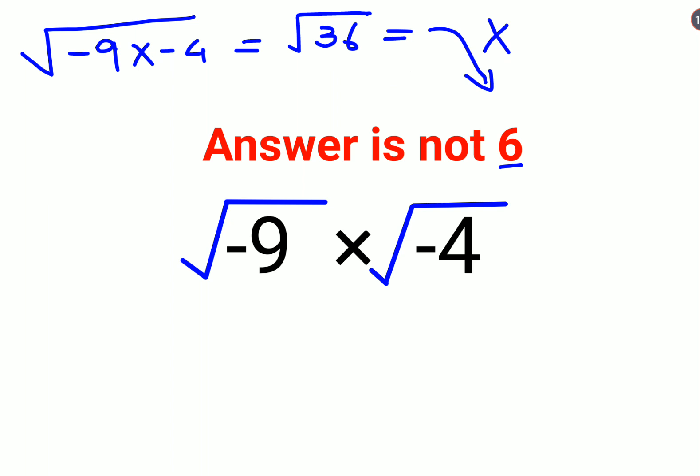When you have negative roots, you write it this way: √9 × √(-1) × √4 × √(-1).